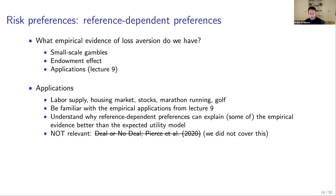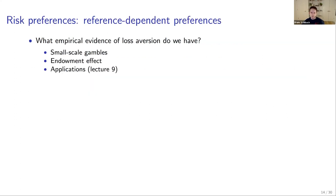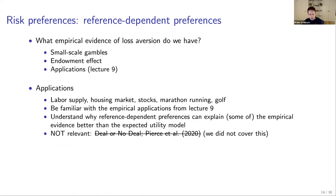You should understand why reference-dependent preferences can explain empirical evidence better than the expected utility model, and which specific feature — changes vs. levels, loss aversion, or diminishing sensitivity — explains what. We focused mostly on loss aversion. The deal-or-no-deal evidence and the Pearson paper from the last few slides of lecture 9 were not covered, so no questions will be asked about those.